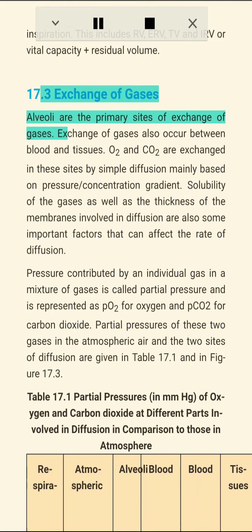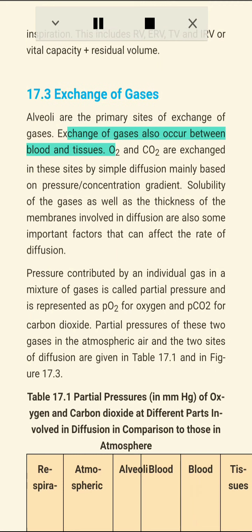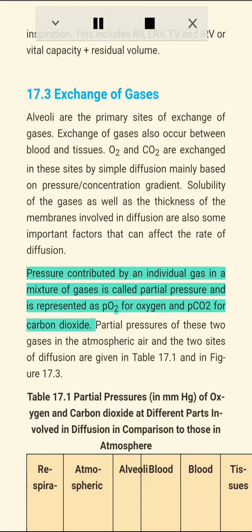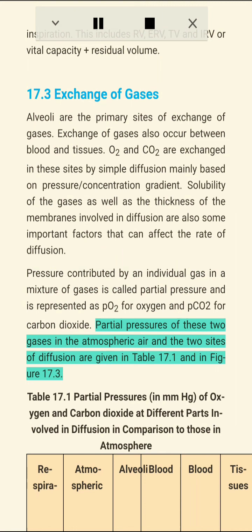Section 17.3: Exchange of Gases. Alveoli are the primary sites of exchange of gases. Exchange of gases also occurs between blood and tissues. O2 and CO2 are exchanged by simple diffusion, mainly based on pressure or concentration gradients. Solubility of the gases and thickness of the membranes involved in diffusion are also important factors affecting the rate of diffusion. Pressure contributed by an individual gas in a mixture of gases is called partial pressure, represented as pO2 for oxygen and pCO2 for carbon dioxide.